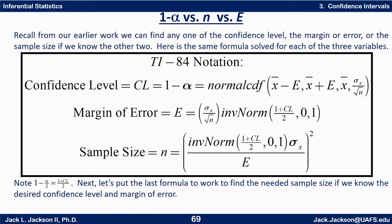Recall from our earlier work that we can find any one of the confidence level, the margin of error, or the sample size if we know the other two. Here is the same formula solved for each of the three variables given in TI-84 notation. Note that 1 minus alpha over 2 is 1 plus the confidence level over 2. Next let's put the last formula to work to find the needed sample size if we know the desired confidence level and margin of error.